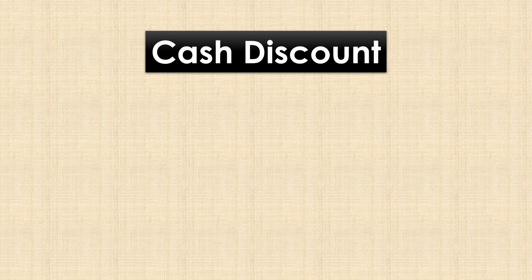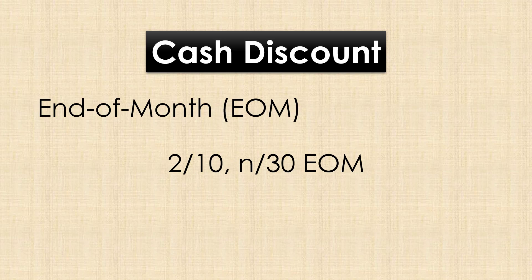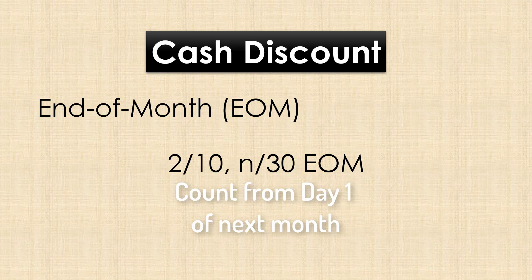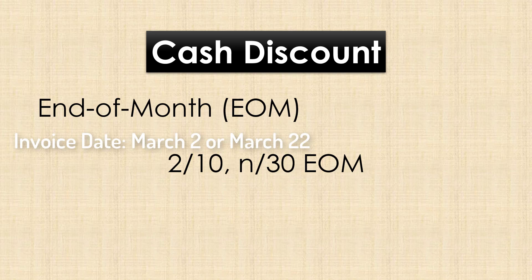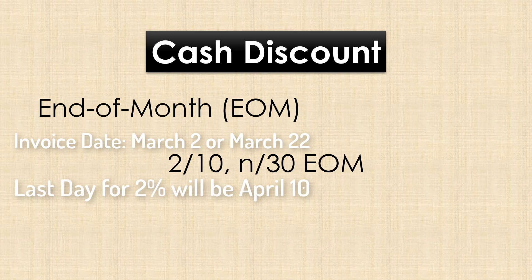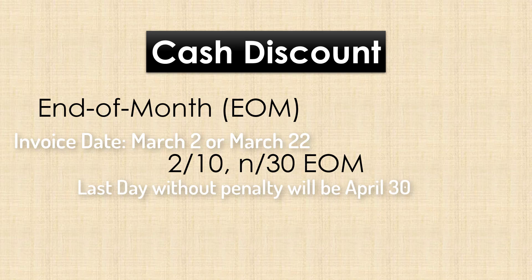Another dating approach is called End of Month Dating or EOM. This approach makes the payment terms effective on the last day of the month — that is, you start counting from day 1 of the following month. In this case, 2/10 net 30 EOM means that the 2% discount will apply till the 10th day of the next month. So whether the invoice was issued on March 2 or March 22, the last date to take advantage of the 2% discount is April 10, and the last date to fully pay the net price without penalty is April 30.